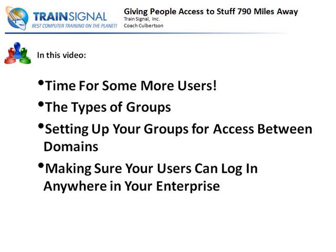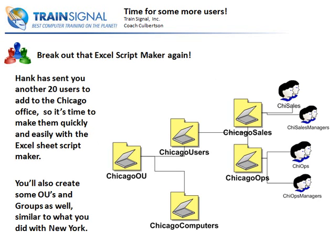Here's the kicker: your enterprise may already be set up for this, but if not, I'll show you where to go. Let's get started and talk about the users we're going to be creating and the general OU structure. We're going to add in about 20 users. We're going to break out that Excel script and create a whole bunch of users really fast, really easily.